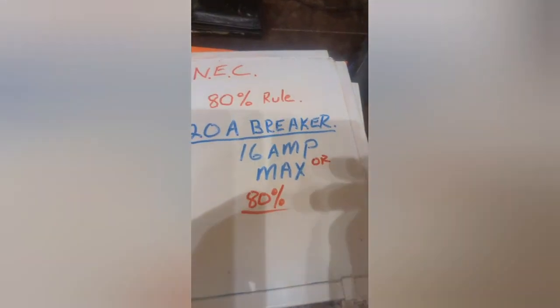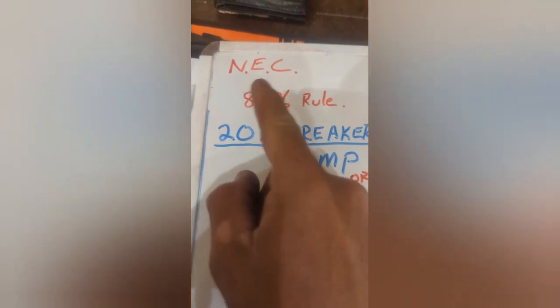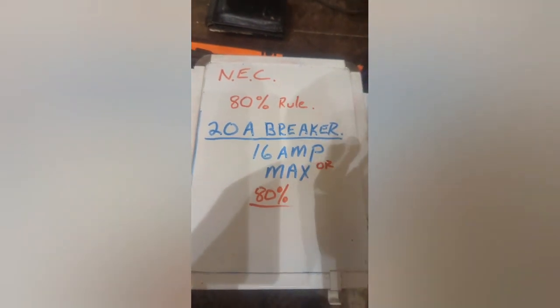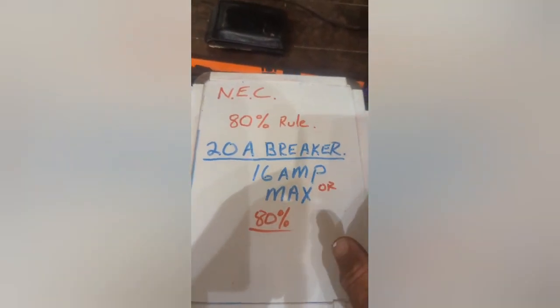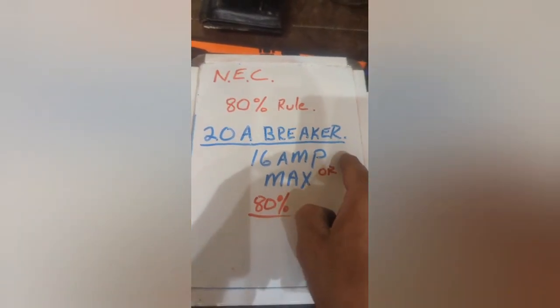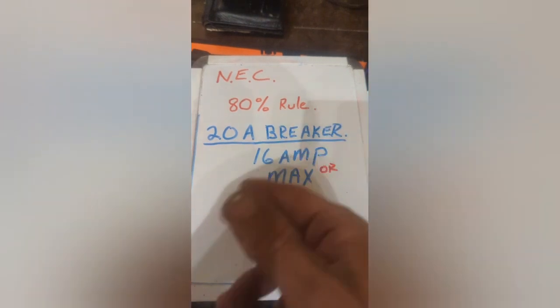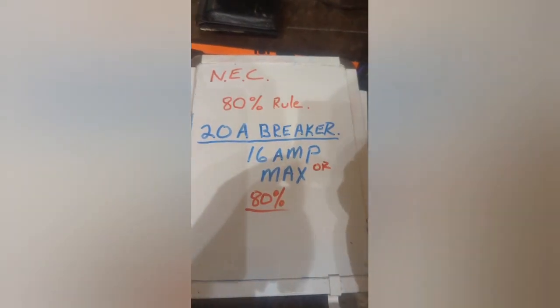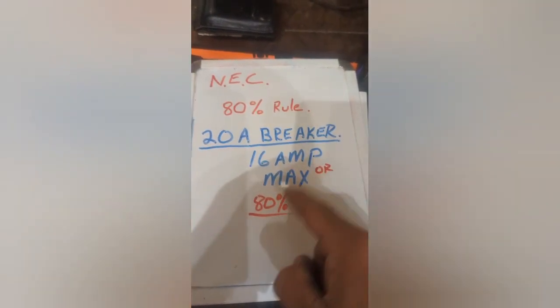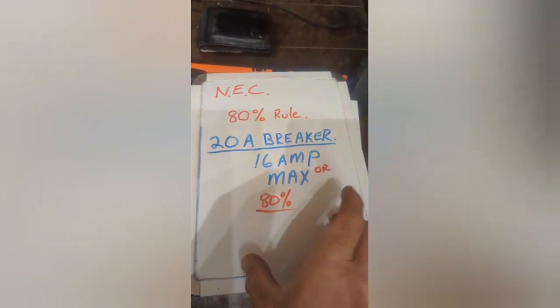Alright, folks. So there's this little place called the NEC or the national electrical code. And there's this thing called the 80% rule. And this is going to apply to your breakers. So it's real simple. If you have a 20 amp breaker, you should only be running at 80% of that capacity of that breaker. So in other words, your continuous load, which is described as three hours or more, should be at 16 amp max or 80%.